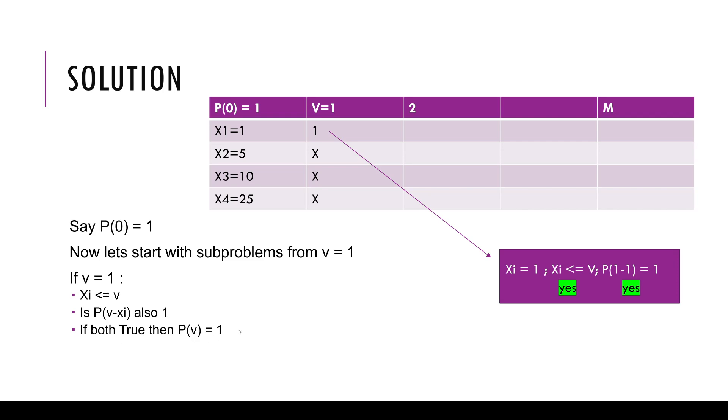Just running through this example real quick, when v equals 1 and I take the 1 cent coin here, I know that 1 cent is less than or equal to the value of 1 cent, and then if I do P(1 minus 1), P(1 minus 1) is P(0) and P(0) we assume to be 1. So both those conditions are met and therefore we put 1 here.